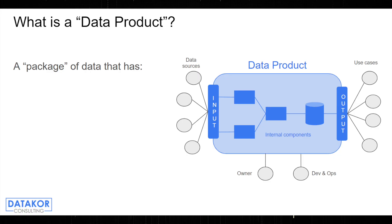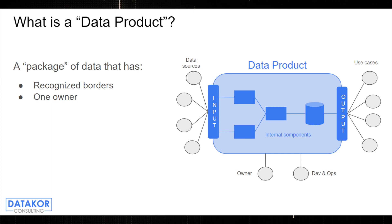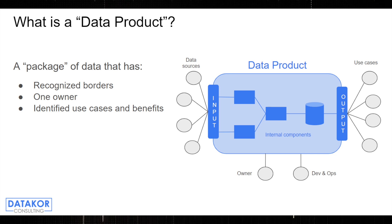The way I see it — I'm not sure if this is academically correct — but the way I see this actually working is that a data product is basically a set, a kind of package of data and related components, which we manage as a single product. So it has its boundaries, its borders that we identify. It has a single owner, a product owner who knows they own everything within these boundaries. And it has its identified use cases and benefits, because what is a product that doesn't have any use cases.